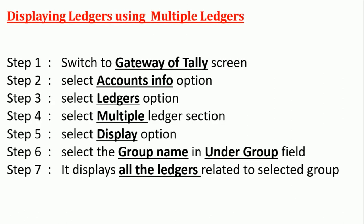Now we will see how to display multiple ledgers. Step one, switch to Gateway of Tally screen. Step two, select Accounts Info option. Step three, select Ledgers option. Step four, select Multiple Ledger section. Step five, select Display. Step six, it will ask for the group name — of which group you want to display the related ledgers. Step seven, it displays all the ledgers related to the selected group.